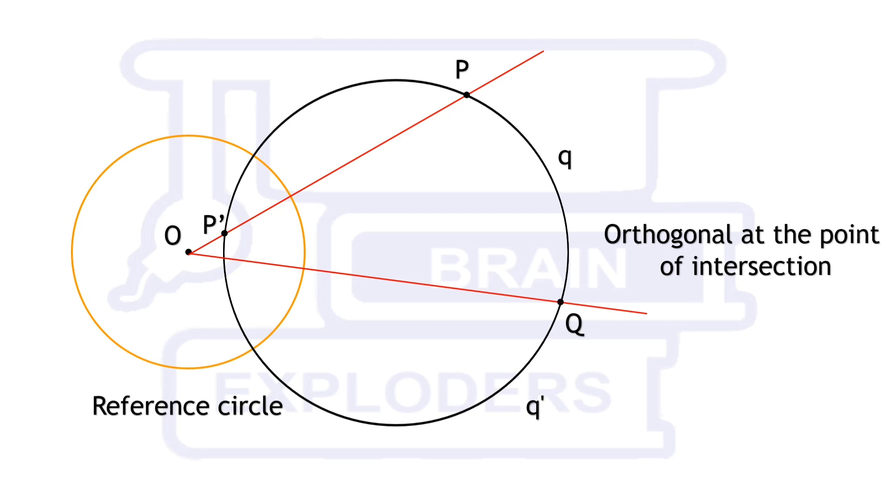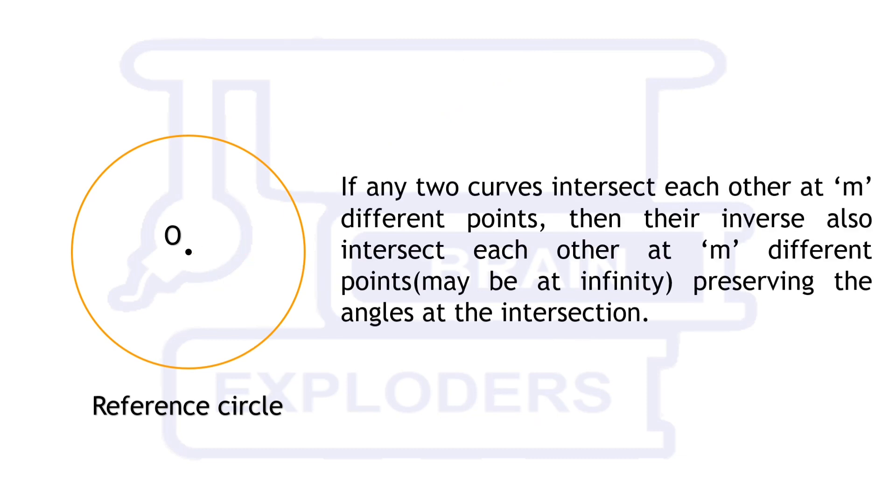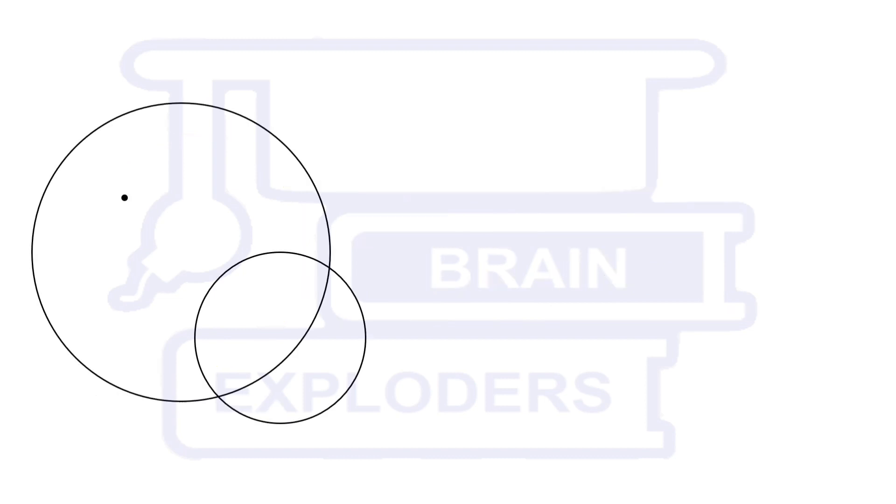If any two curves intersect each other at m different points, then in general, their inverse also intersect each other at m different points, preserving the angles at the intersections.